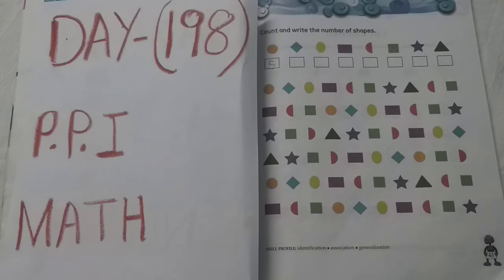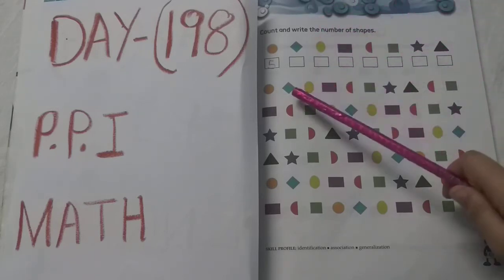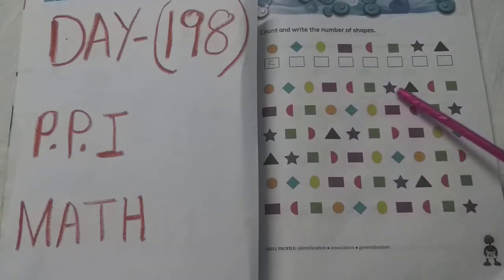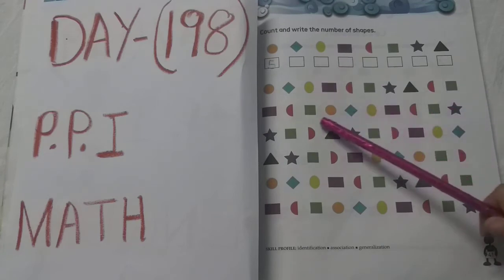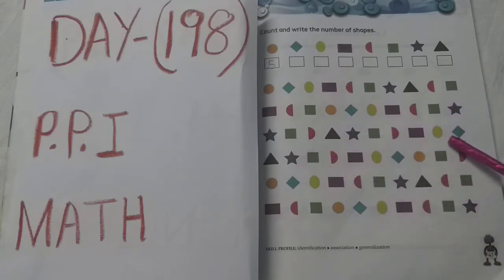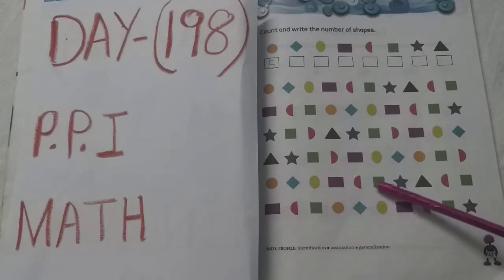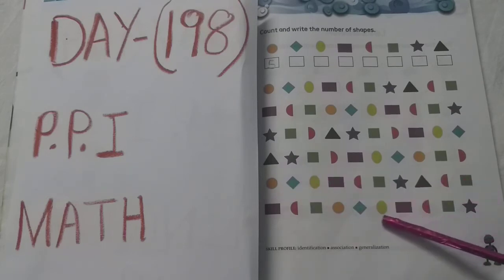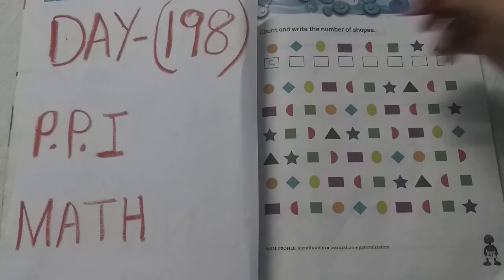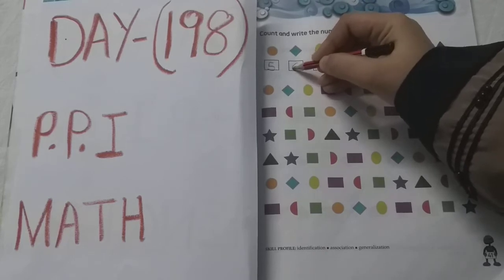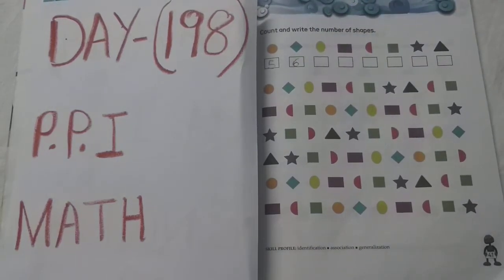Now next, which shape is it? Diamond. So we have to count diamonds. One diamond is in blue color, two, three, four, five, six. How many diamonds? Six. Right, number six.